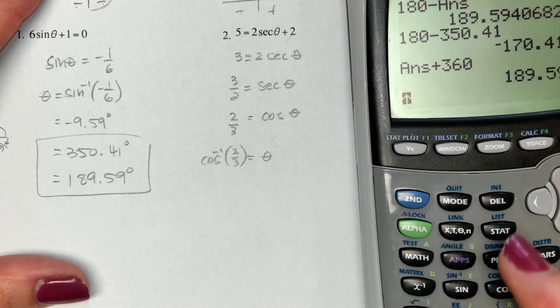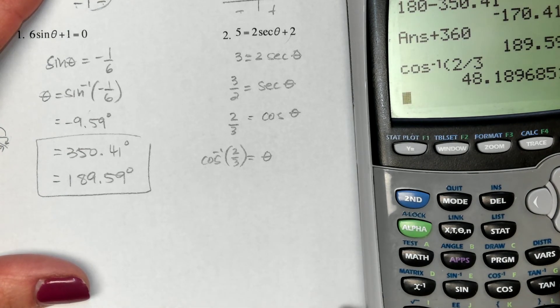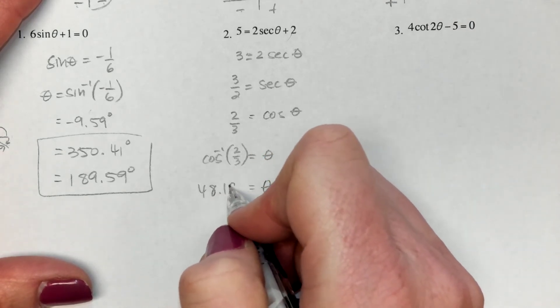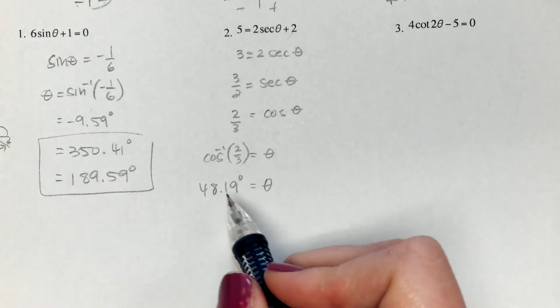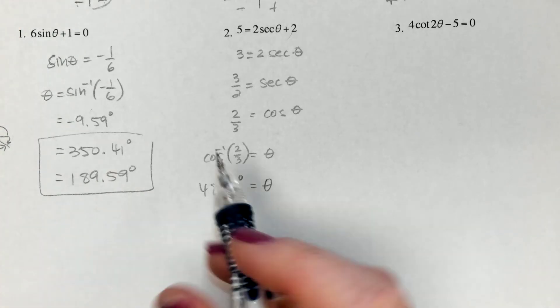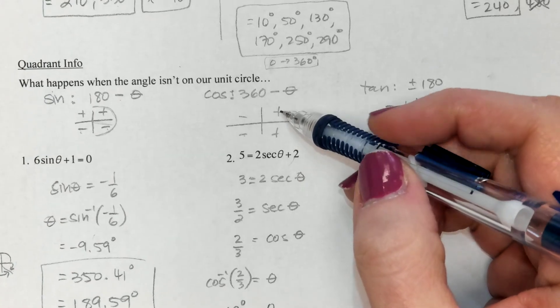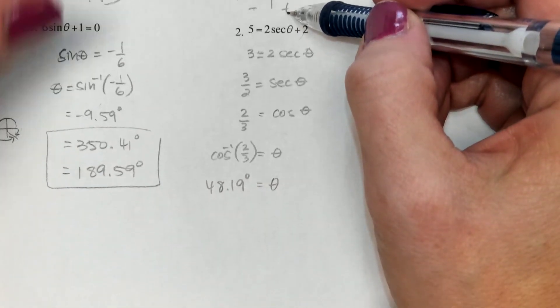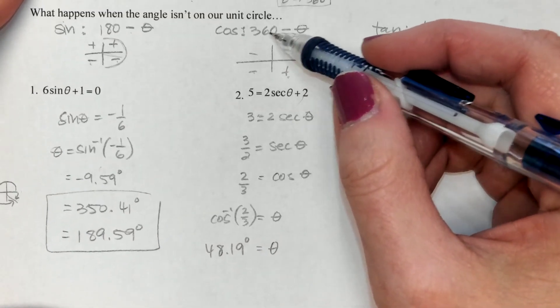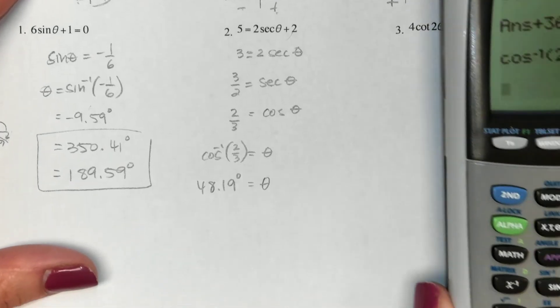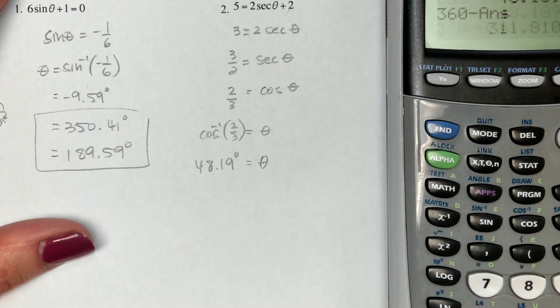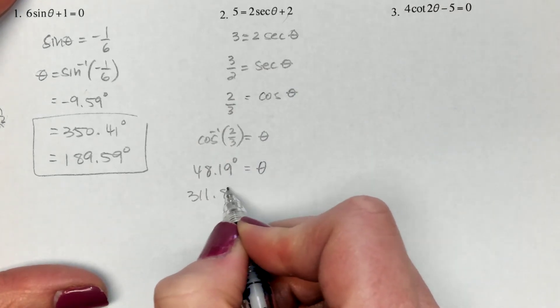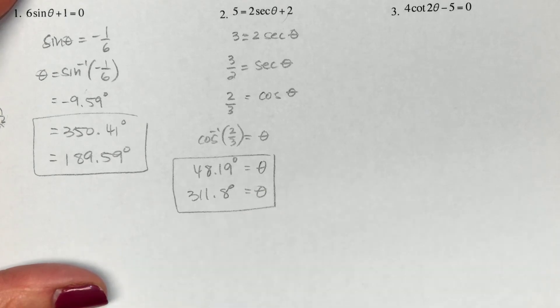Cosine inverse 2/3 gives me about 48.19. Well, that's nice. I didn't have to figure anything out. We didn't have to do any adding of 360 because we were a positive angle. When I look at my little chart here, that's a positive angle here. I need the other one that's down here. So that's where this little trick comes in. So 360 minus the angle we got gives us 311.8. Those are my two angles that will work in this one.